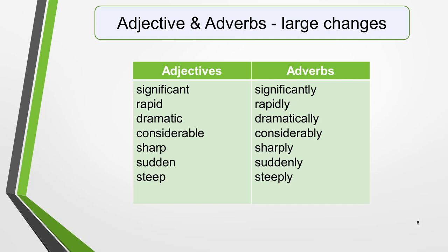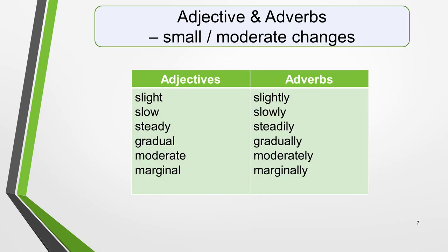Learn two or three words for large changes and two or three words for small or moderate changes. Here are some adjectives and adverbs for describing small or moderate changes. For adjectives: slight, slow, steady, gradual, moderate, and marginal. For adverbs, just add '-ly': slightly, slowly, steadily, gradually, moderately, and marginally.